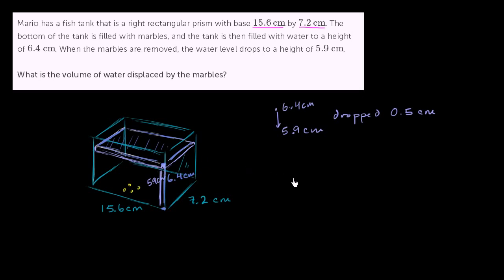So we're essentially trying to find the volume of a rectangular prism that is equal to 15.6 by 7.2 by 0.5. And I haven't drawn it to scale yet, but I want to see all of the measurements. So it's going to be 15.6 centimeters in this direction, 7.2 centimeters in this direction, and 0.5 centimeters high.